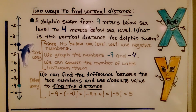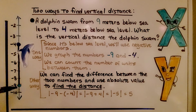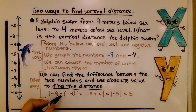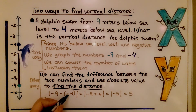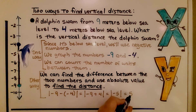Just like the horizontal number line, there are two ways to find vertical distance. A dolphin swam from nine meters below sea level to four meters below sea level — what is the vertical distance? We use negative numbers since it's below sea level. We graph negative nine and negative four, count the units between them — that's five meters. The other way: we find the absolute value of negative nine minus negative four, rewrite it to add the opposite as the absolute value of negative nine plus four, which equals the absolute value of negative five, which is five. Absolute values are always positive, so we get five.